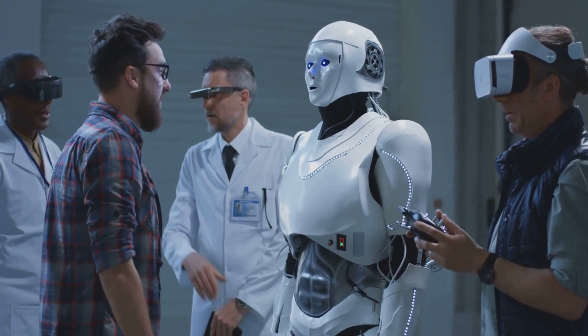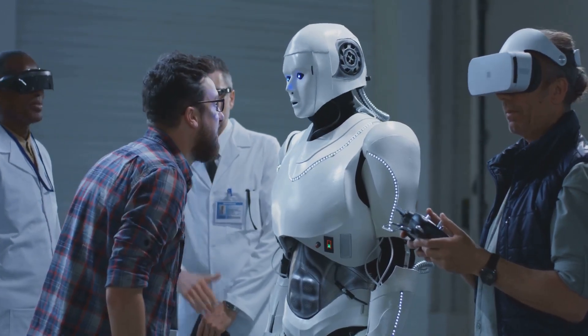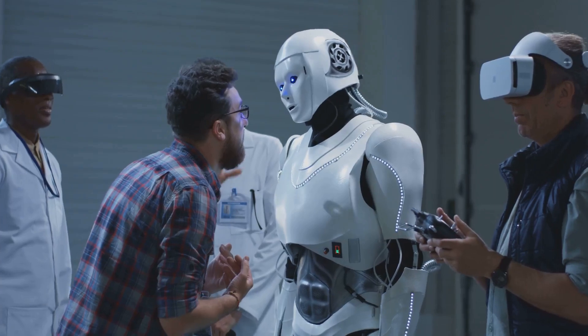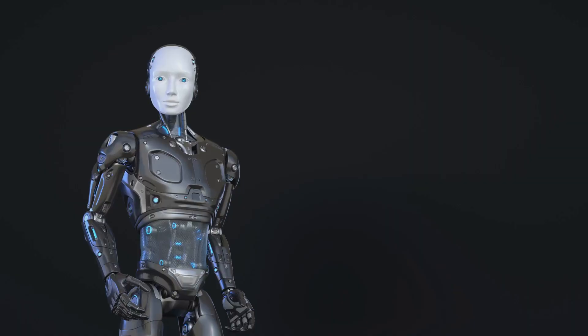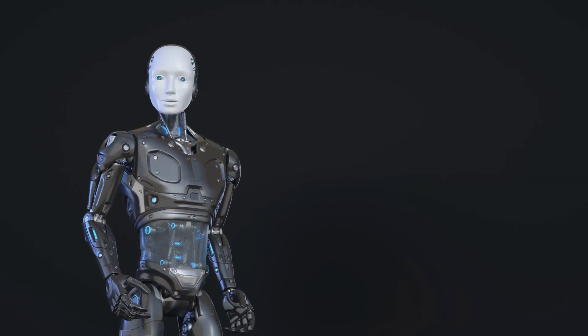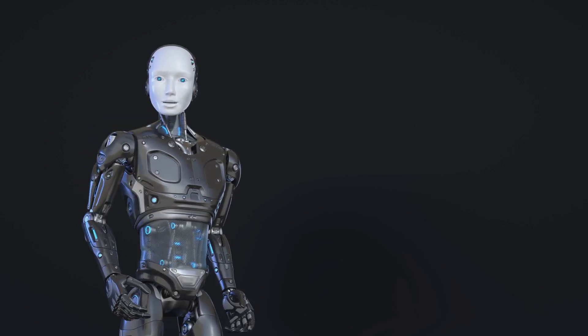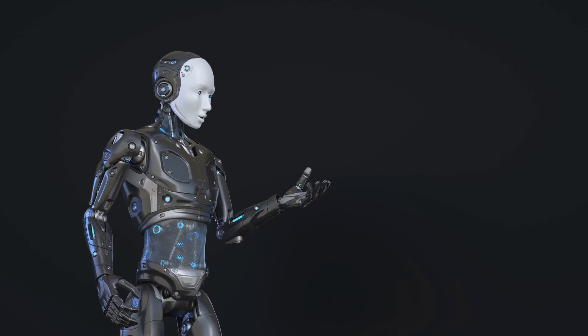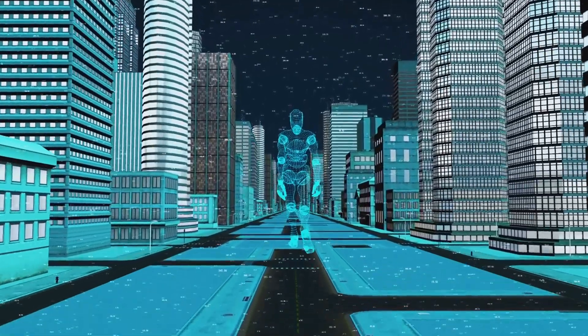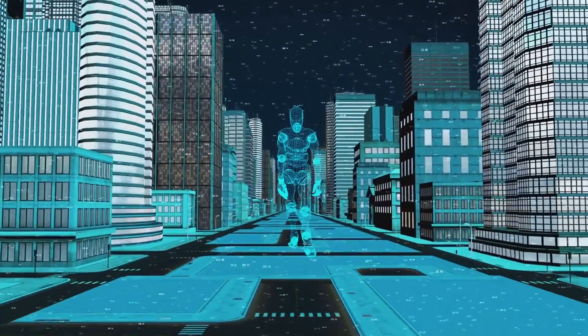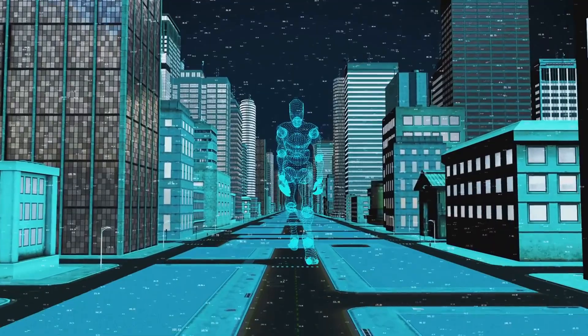But perhaps the most intriguing development in recent years is the rise of social robots like SOFIA. Developed by Hanson Robotics in 2016, SOFIA is a humanoid robot capable of naturalistic conversations and expressing a range of human-like emotions. The existence of such robots opens up a world of possibilities from companionship and entertainment to education and healthcare.